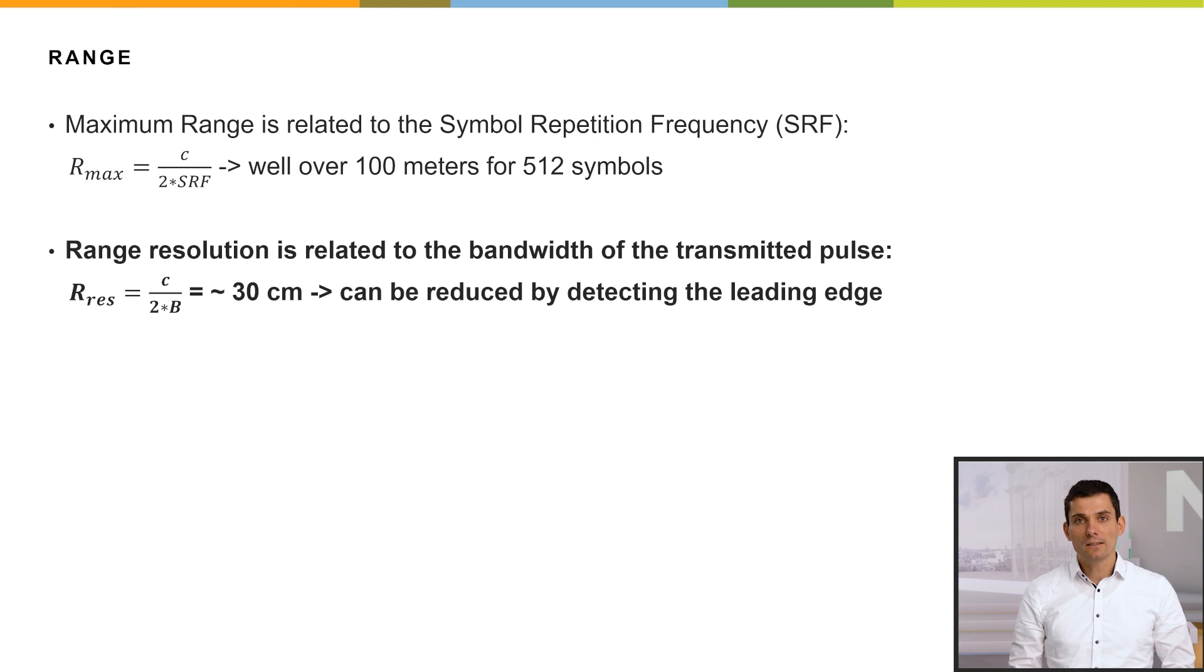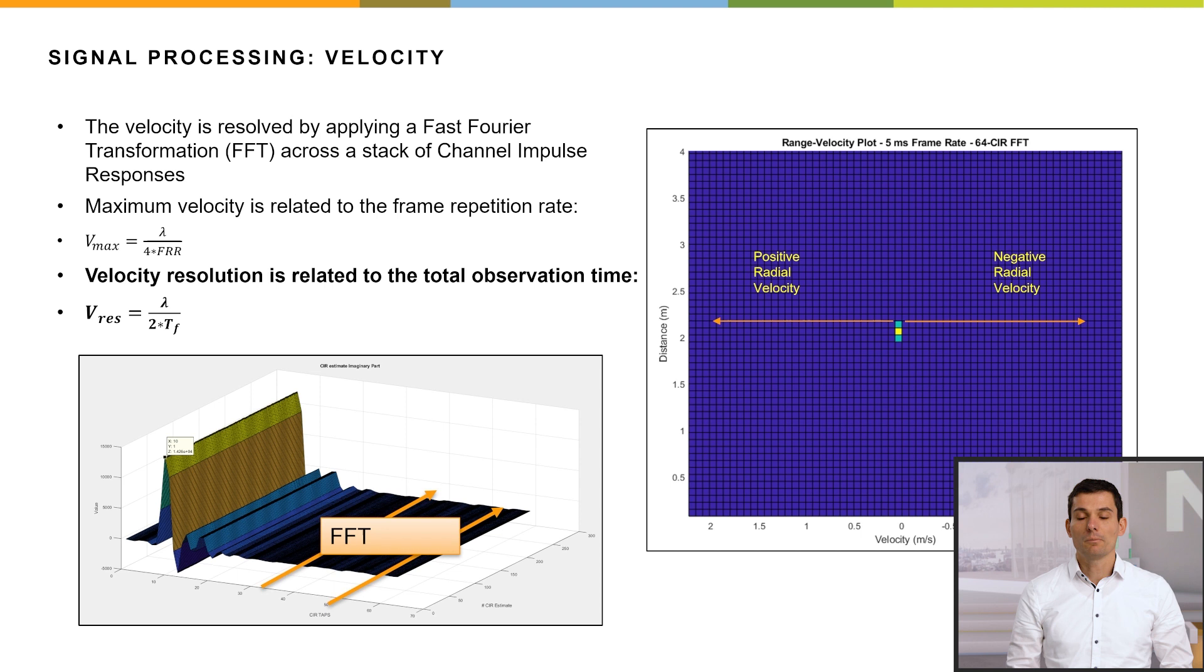Especially for vital sign detection, the range resolution is not of importance that much. It's rather the velocity, for example, the movement of the chest induced by breathing. The velocity can be resolved by applying a fast Fourier transform, FFT, across a stack of channel impulse responses. And here, the velocity resolution is key. It is related to the total observation time, as we see on the left-hand side.